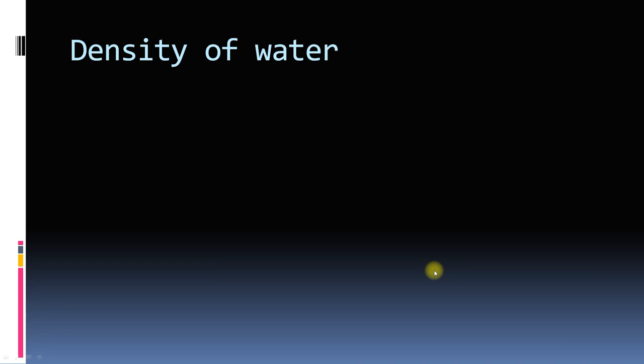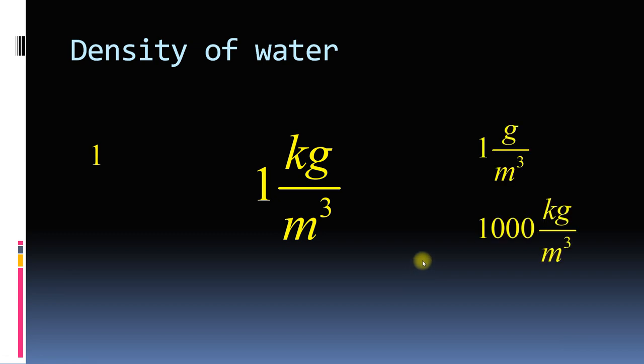When you are asked about density of water, do you say it is 1? And when asked further, do you say it is 1 kg per meter cube, and then if probed further you tell it is 1 gram per meter cube or 1000 kg per meter cube? You are not very convinced about the value of density of water.